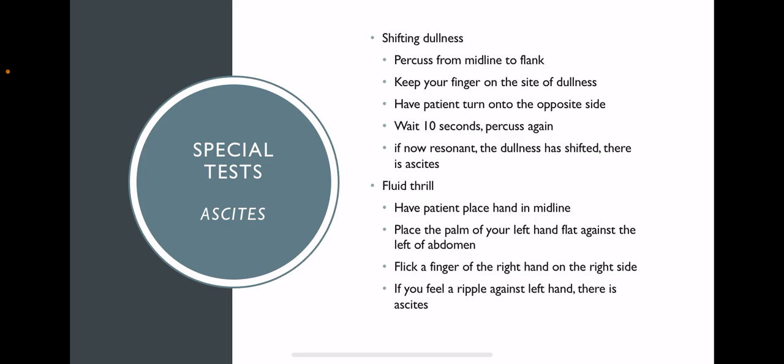Then have the patient turn onto their opposite side, with the opposite side down on the table. Wait 10 seconds to let ascites fluid settle—for it to flow downward with gravity. Then percuss again. If the site where you percussed before and it was dull now becomes hollow sounding again, if it's resonant and the dullness has shifted, you have ascites fluid there.